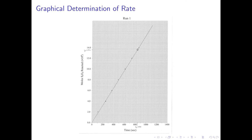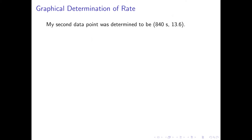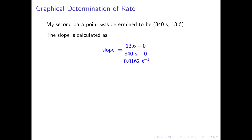Returning to my plot, by reading to the left, my y2 value is 13.6, and by reading down, my x2 value is 840 seconds. We can now calculate the slope using this second data point of 840 seconds and 13.6. The numerator is 13.6 minus 0, and the denominator is 840 seconds minus 0 seconds, giving a slope of 0.0162 per second.